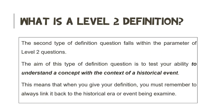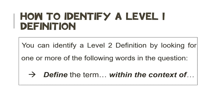Now that we know how to identify a level 1 definition question and how to respond to it, let us take a look at the second category: a level 2 definition question. The aim of this type of definition question is to test your ability to understand the concept within the context of the historical event. This means that when you give your definition, you must always remember to link it back to the historical era or event that is being examined. The words of the question will always look as follows: 'Define the term within the context of.' When you see these words, then you know that you are dealing with a level 2 definition question.